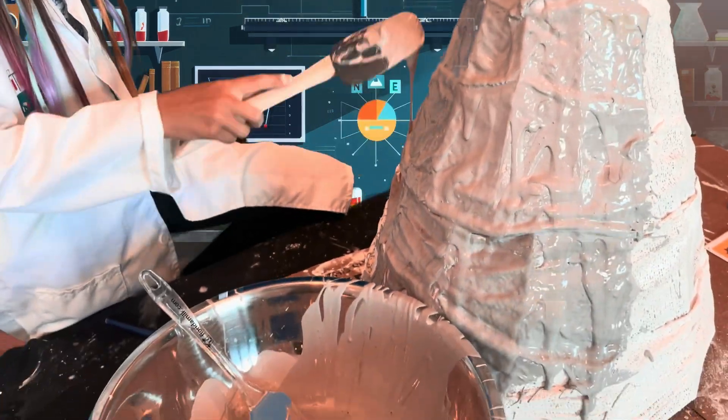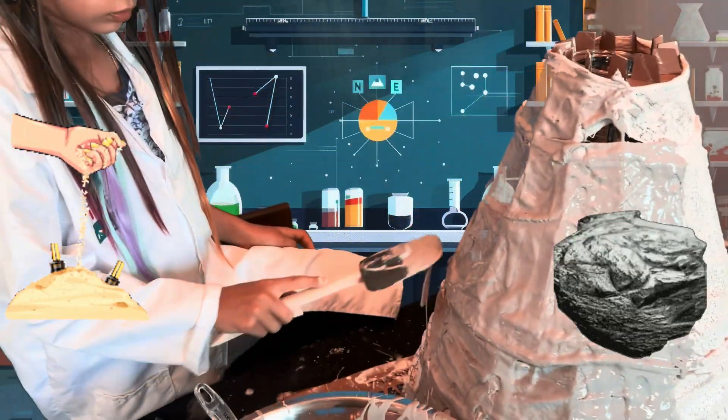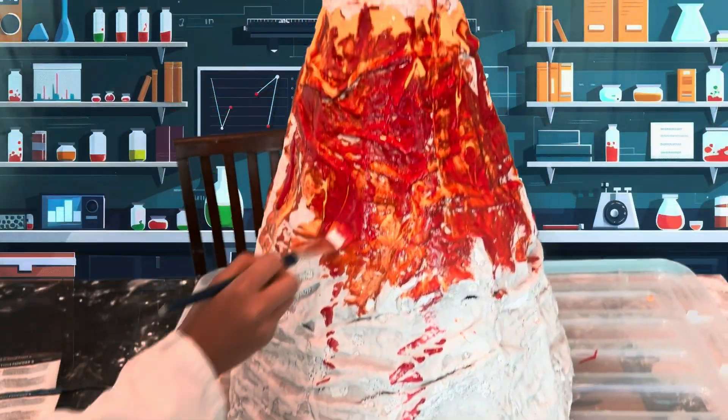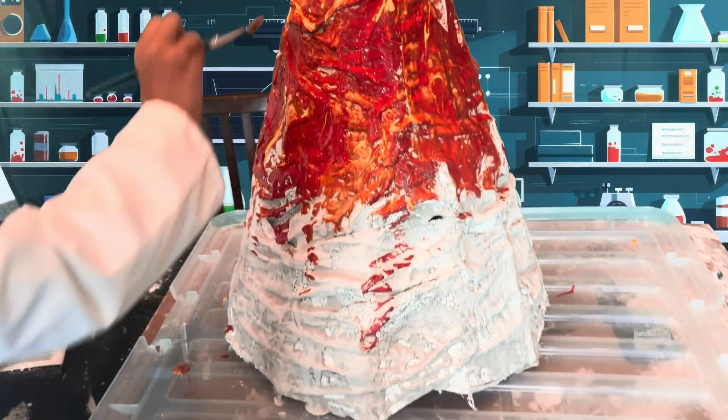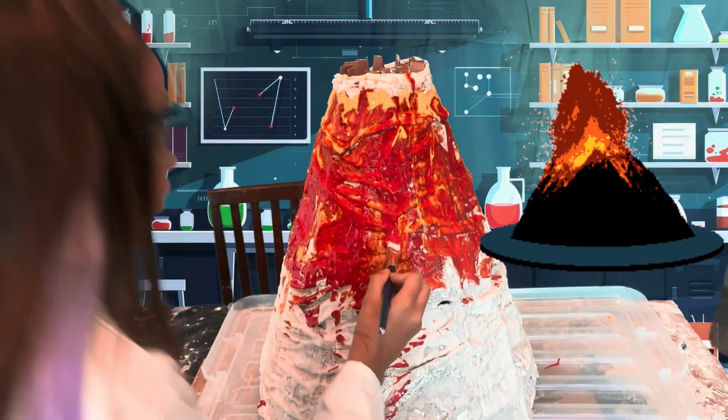This will be what we put on the volcano walls to make it look like sand and rock. Now I'm painting it red and yellow, so it looks like lava.